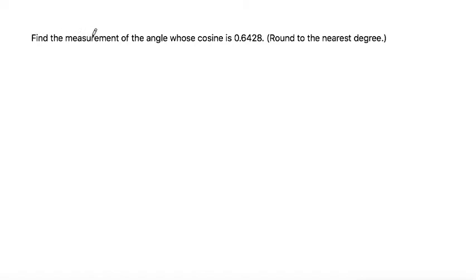This problem says to find the measurement of the angle whose cosine is 0.6428, round to the nearest degree.